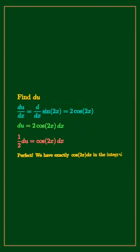The derivative of u is 2 cosine 2x dx. So du equals 2 cosine 2x dx. Thus, 1 half du equals cosine 2x dx.